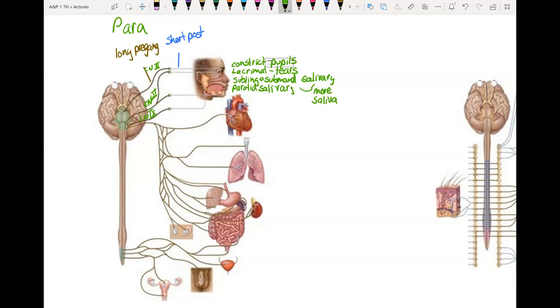Remember, this is the rest and digest, and having saliva is part of the digestive system. Then we have the vagus, number 10. This one does the most. This is the one you're going to hear about in a lot of future chapters.